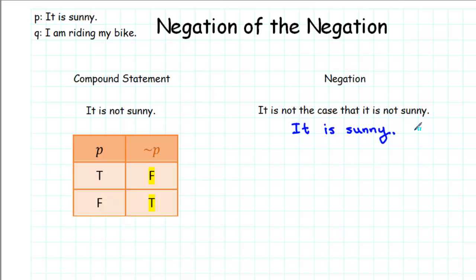And we can see that from the truth table as well. If we find the case where not P is false, we see that occurs precisely when P is true. And P is true means that it is sunny.